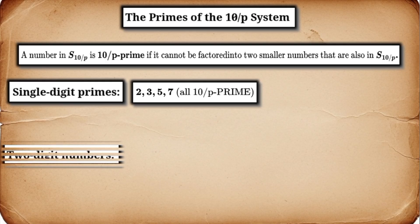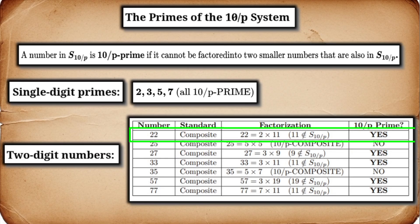Now, let's look at the two-digit numbers. This is where it gets wild. 22. Standard, 2 times 11. Is 11 in S10 over P? No, it has a 1. No other factors. Therefore, 22 is a 10 over P prime.